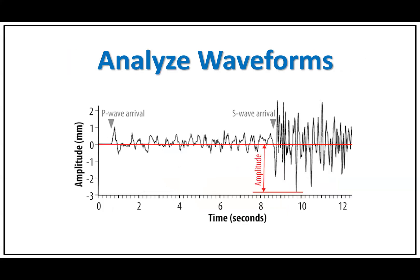Analyze wave forms. Seismic waves recorded on a seismogram can have various shapes and patterns indicating different characteristics of the earthquake. For example, the amplitude and duration of the waves can provide information about the earthquake's magnitude and energy released. Sharp spikes or irregular patterns may indicate strong ground motion or complex seismic events.